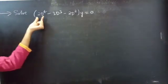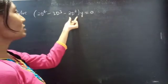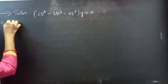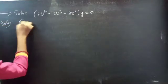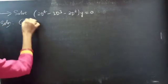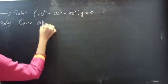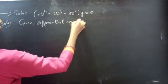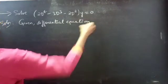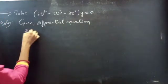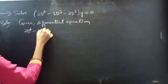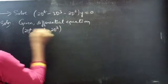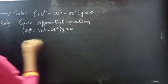Problem: Solve (2D⁴ - 3D³ - 2D²)y = 0. Given differential equation: 2D⁴ - 3D³ - 2D² into y equals 0, which is in operator form.